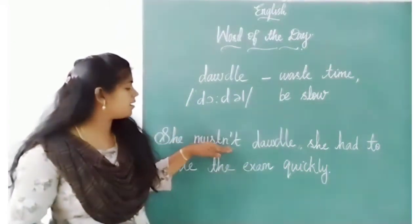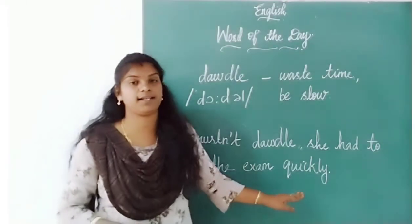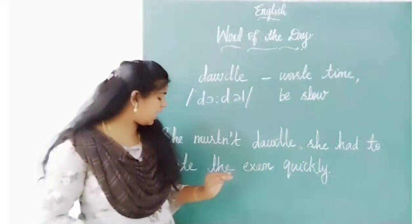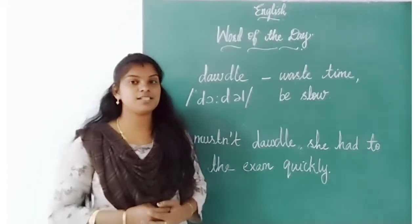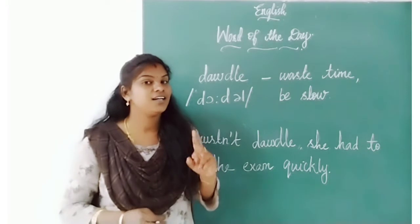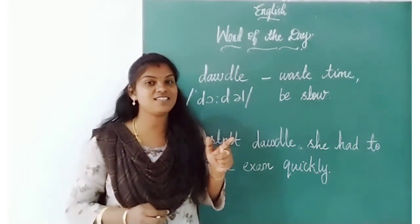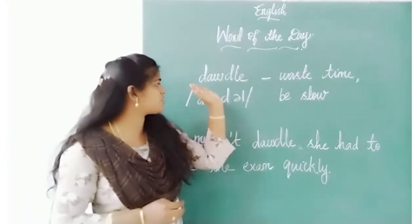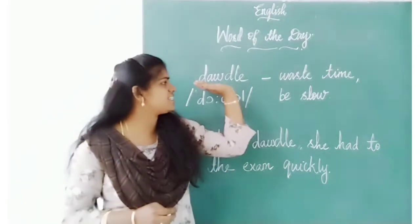She must not dawdle — she had to write the exam quickly. Have you got it? You must not dawdle. You have to write five sentences quickly now. That means you should not waste your time. You have to write five sentences using the word 'dawdle.'